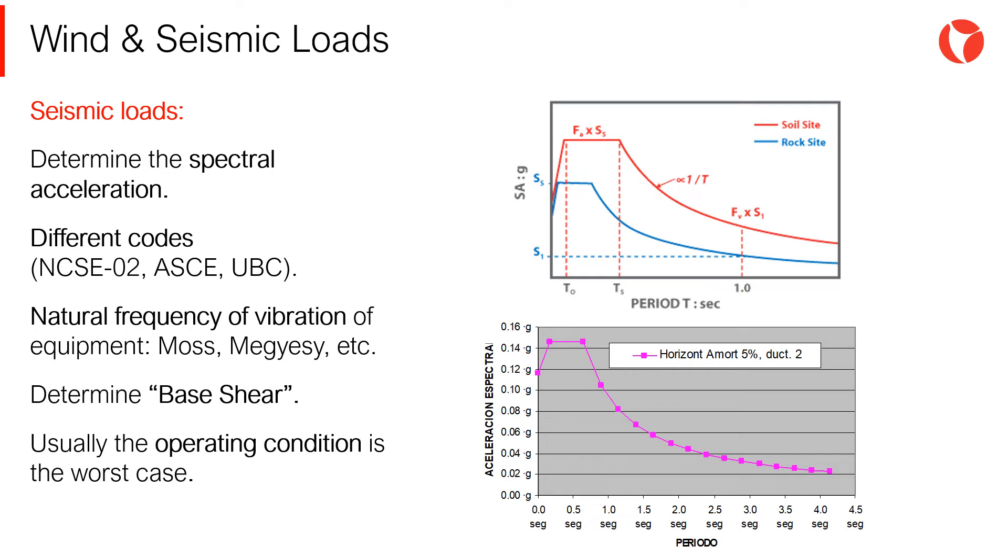Prior to obtaining the spectral acceleration of the shear force applied at the base, the natural vibration frequency and period of the system must be known. These parameters must be obtained for each condition to be analyzed: vacuum, operation, MT, etc. Usually, the operation condition governs the seismic calculations.